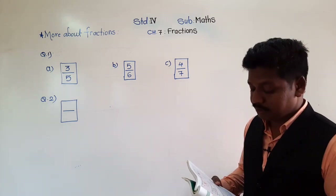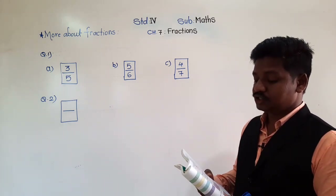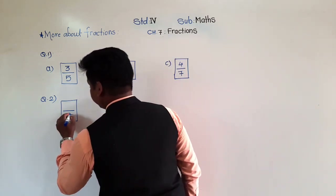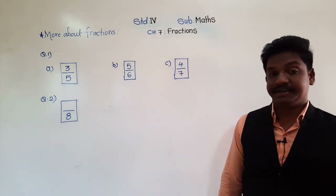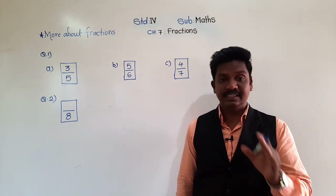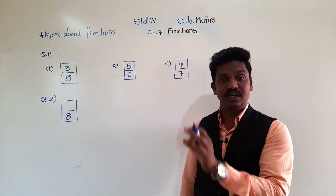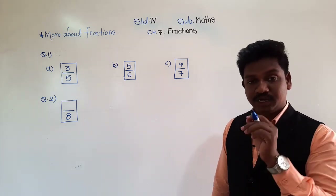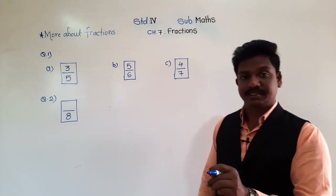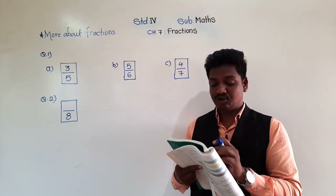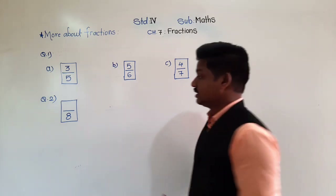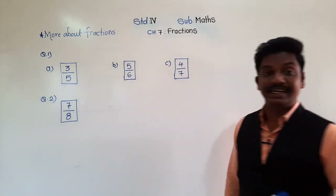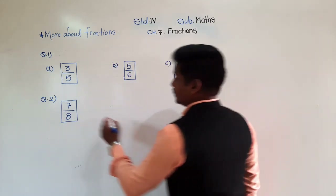In the first circle, it is divided into how many equal parts? 1, 2, 3, 4, 8 — it is divided into 8 equal parts. As we have to write the fraction for the unshaded portion, count the unshaded parts. Out of 8, only 1 is shaded, which means there are 7 unshaded parts. So write 7 here — 7 eighths.